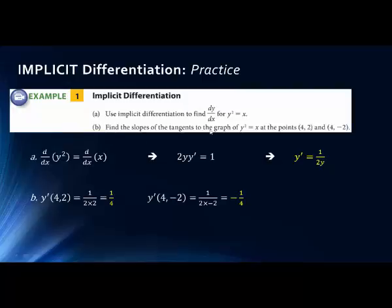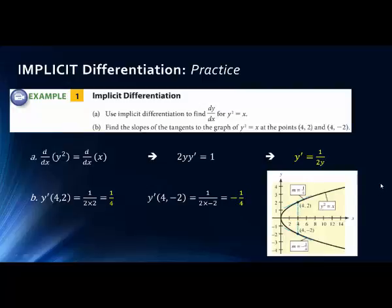We're looking for the slope of the tangent to the graph — that's what a derivative is. This formula gives us the slope of the tangent at any point. We want the slope at two specific points: (4, 2) and (4, -2). Notice our slope formula only uses the y term, so we only need the y values. For the slope at (4, 2), it's 1 over 2 times 2, or positive 1/4. For the slope at (4, -2), we use negative 2: 2 times negative 2 is negative 4, so we get negative 1/4. If you look at the diagram, we have a sideways parabola, and we can see why the slope is negative at (4, -2) and positive at (4, 2).